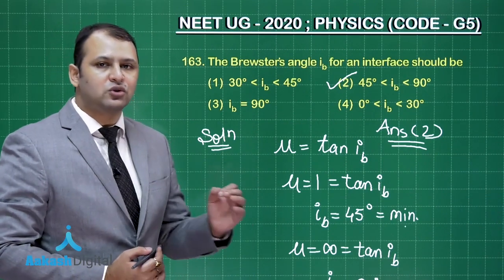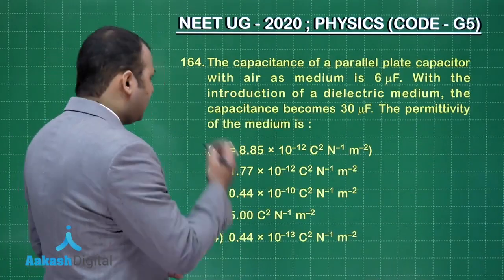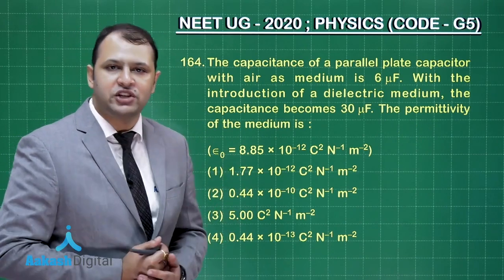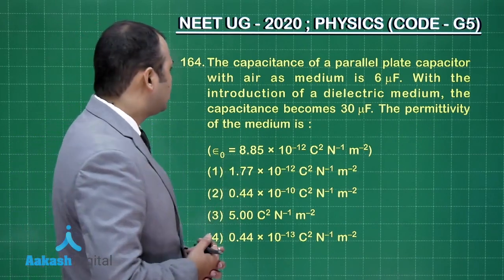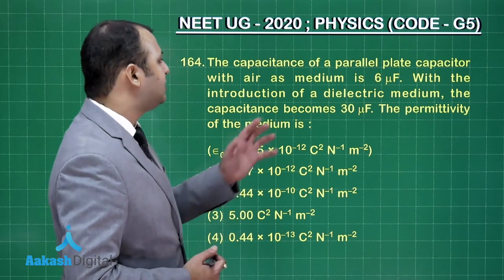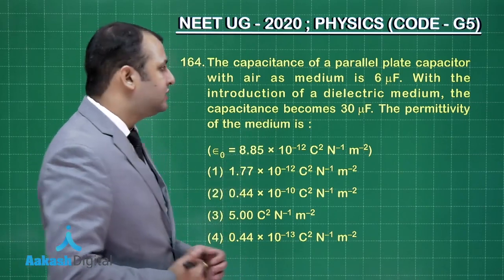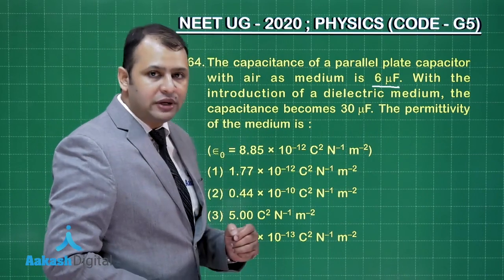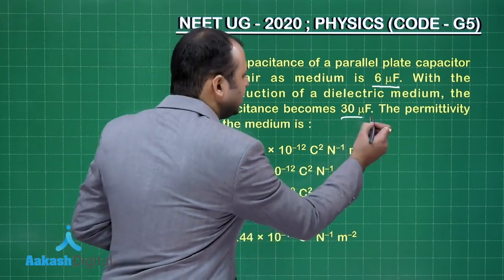Now let's move on to the next question, question number 164. This question belongs to chapter electrostatic potential and capacitance. As per the question, the capacitance of a PPC with air as a medium is 6 microfarad. With the introduction of a dielectric medium, the capacitance becomes 30 microfarad.